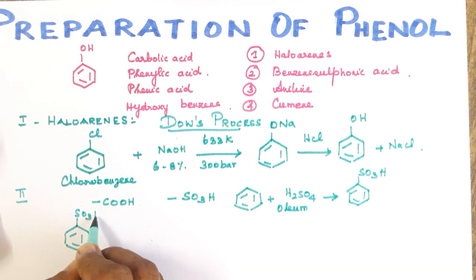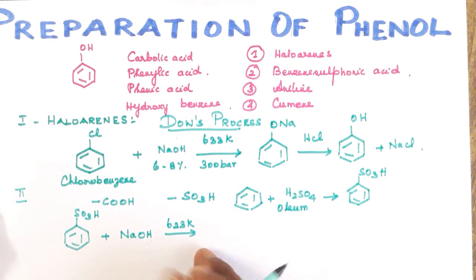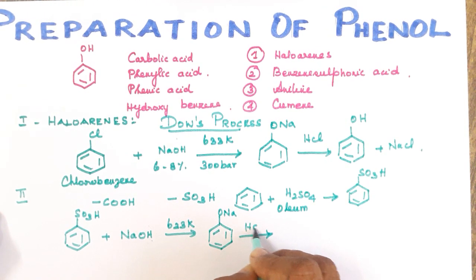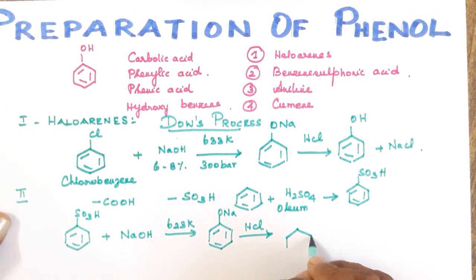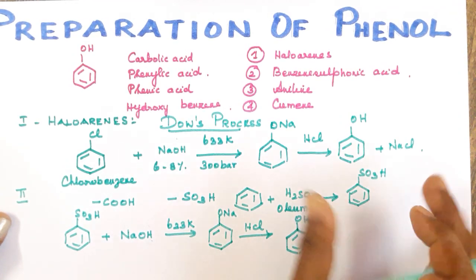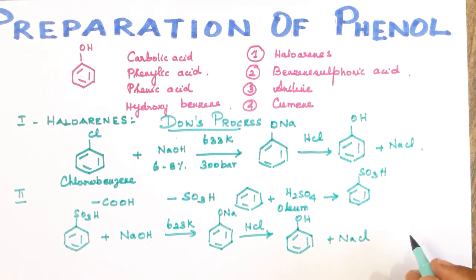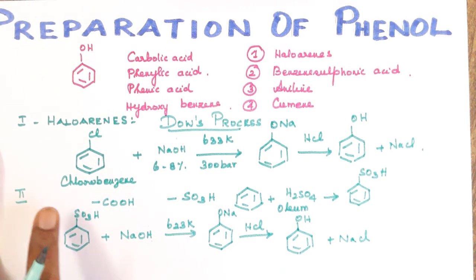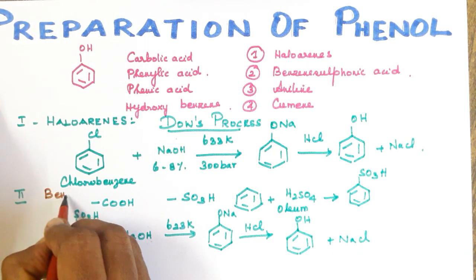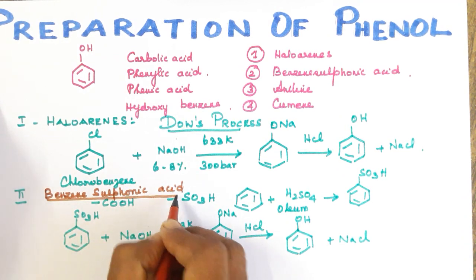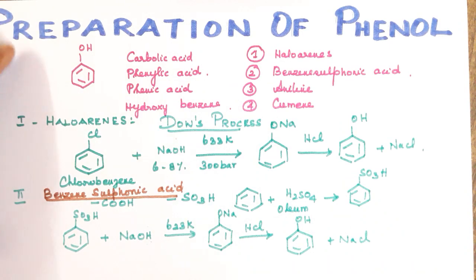Benzene sulfonic acid is then treated with sodium hydroxide at 623 Kelvin. The first product is sodium phenoxide (ONa). On subsequent treatment with HCl, hydrolysis gives phenol (OH). The intermediate sodium phenoxide is the same as in the first method, only the starting reactant is different. This is the second method for preparing phenol from benzene sulfonic acid.